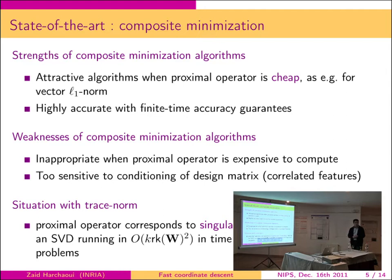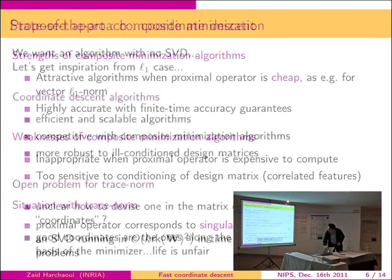The situation with the trace norm is the proximal operator corresponds to performing a full singular value decomposition on the W matrix at each iteration. This is extremely expensive in terms of running time and also in memory.